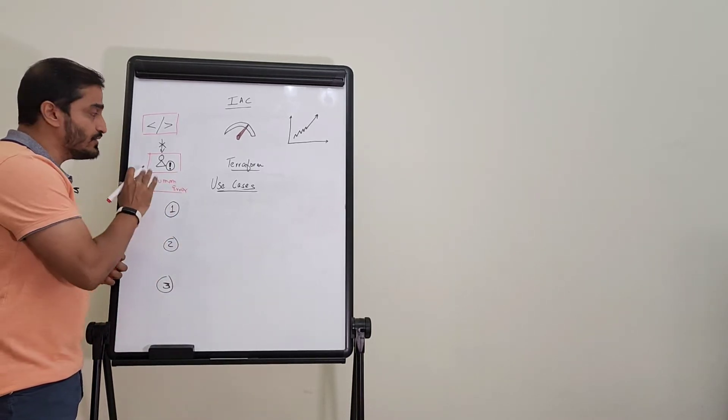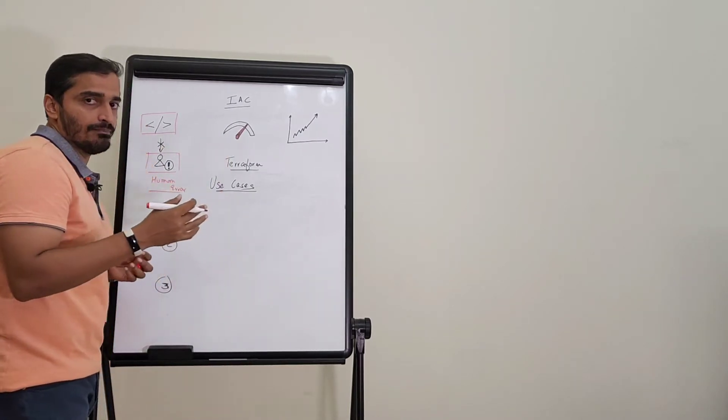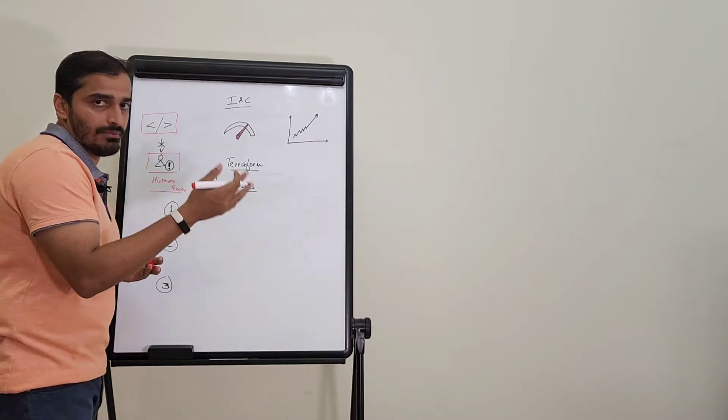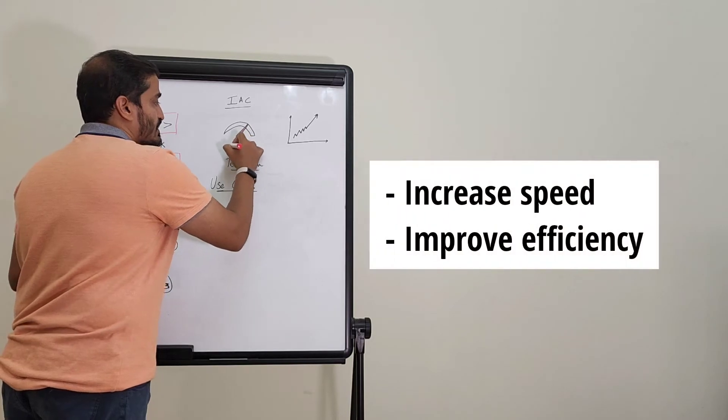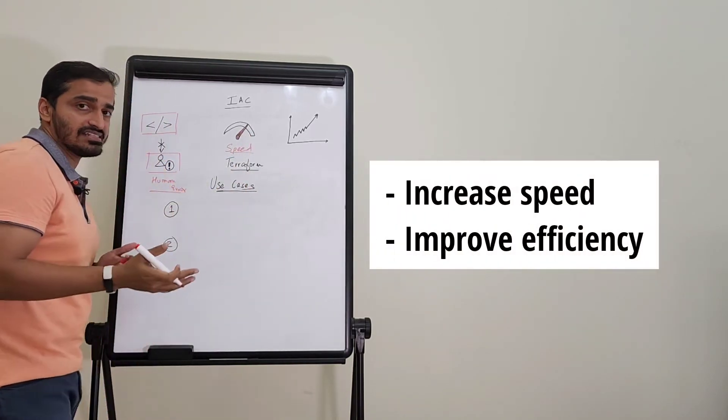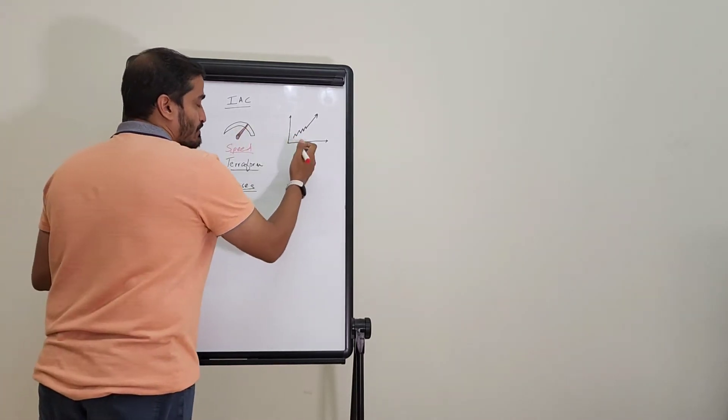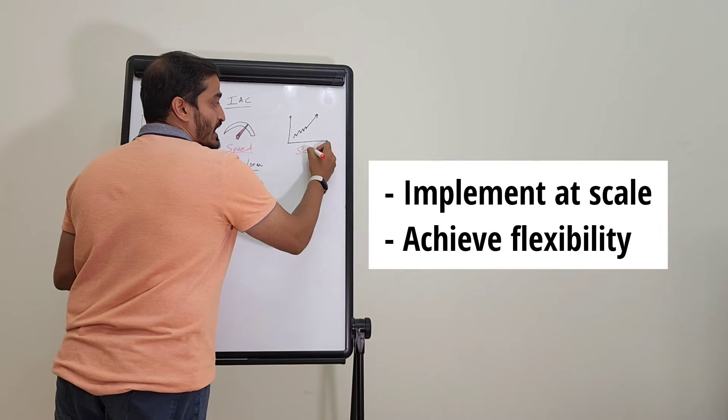The second and most basic principle of why someone implements IaC is because it increases the speed of your functioning, makes you more efficient as an organization, as a process, as a workflow, and the last but not least, it helps you scale.